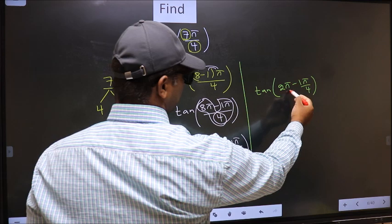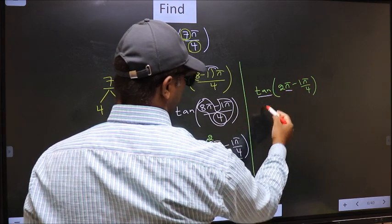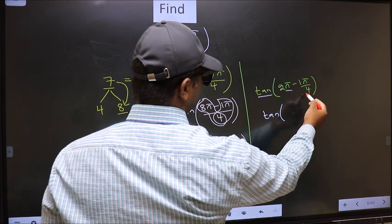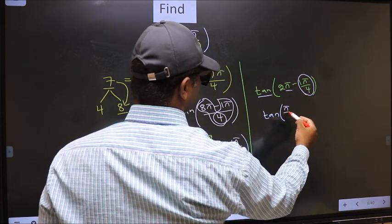Here we have π. So tan is not going to change. It will remain tan. And inside we get this angle π/4.